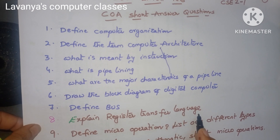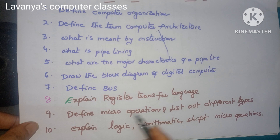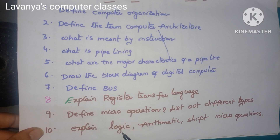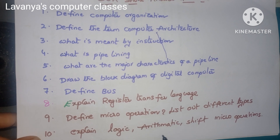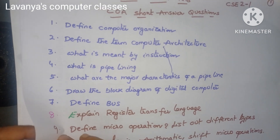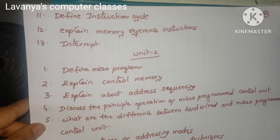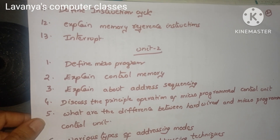Define micro operation. List out the different types. Explain logic micro operations, arithmetic micro operations, and shift micro operations. What is a micro operation? List out the different types of micro operations — all are important questions, as I type also these are very important. Next questions are: define instruction cycle, explain memory reference instructions, and explain the concept of interrupt. These are the Unit 1 questions.